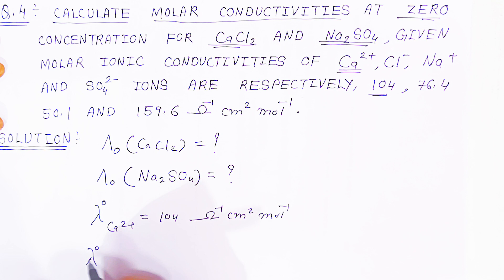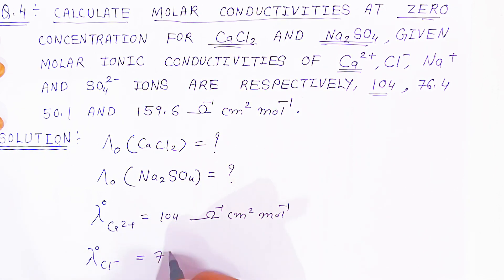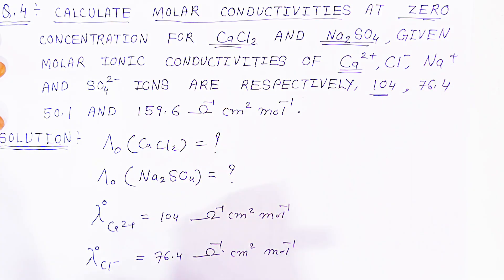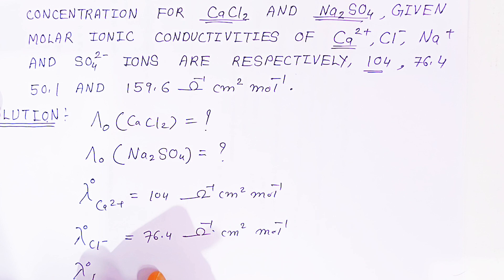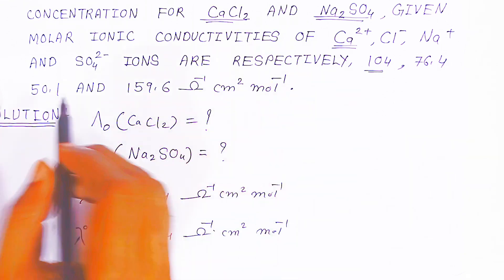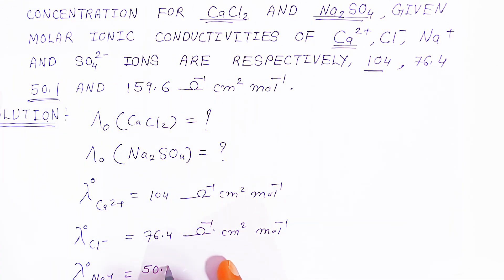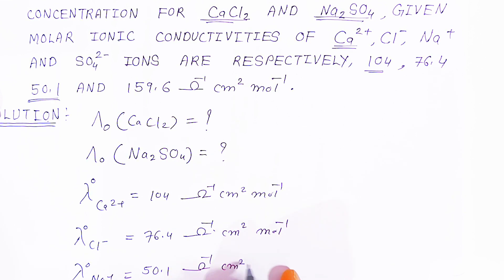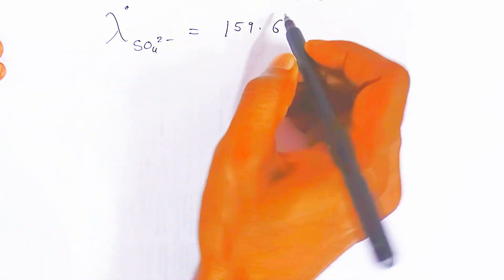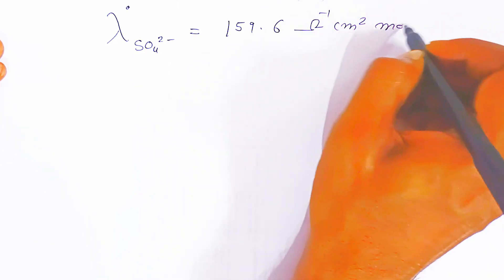Molar conductivity at zero concentration of Cl⁻ is given as 76.4 ohm inverse centimeter square per mole. Molar conductivity at zero concentration of Na⁺ is given as 50.1 ohm inverse centimeter square per mole. And molar conductivity at zero concentration of SO₄²⁻ is given as 159.6 ohm inverse centimeter square per mole.